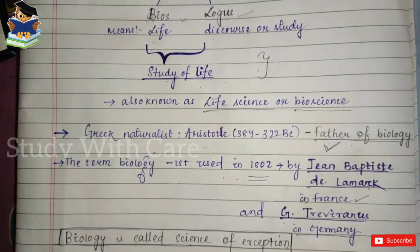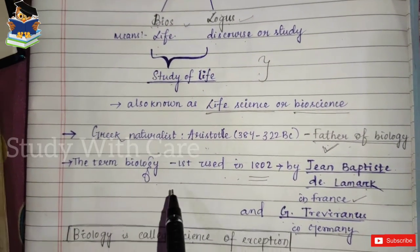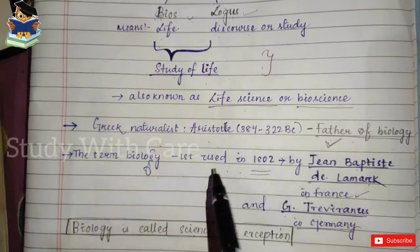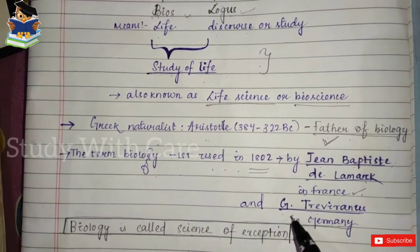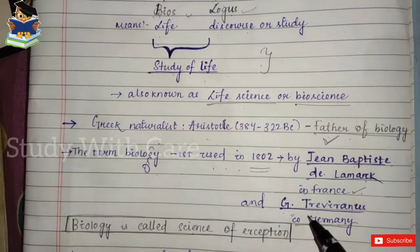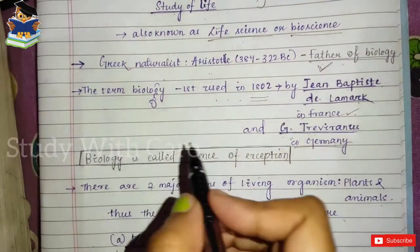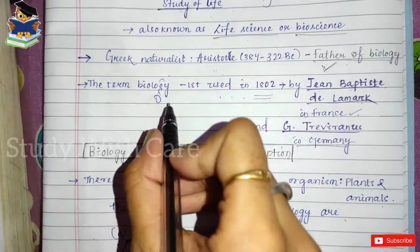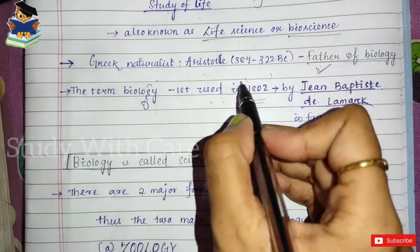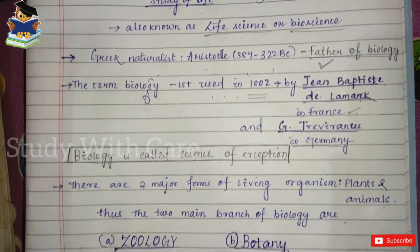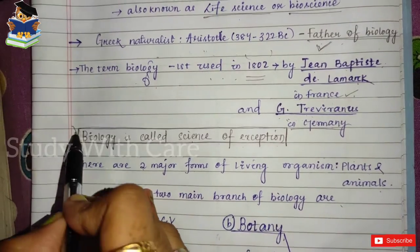The Greek naturalist Aristotle made the first major biological study, so he is known as the father of biology. The term biology was first used by Jean Baptiste de Lamarck and G. Trevinanus in the year 1802.